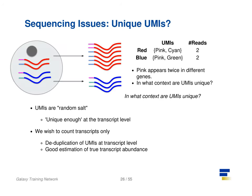In the context of amplification, UMIs do not need to be unique — they just need to be random enough to deduplicate transcripts in order to give a more accurate estimate of the number of transcripts within a cell.